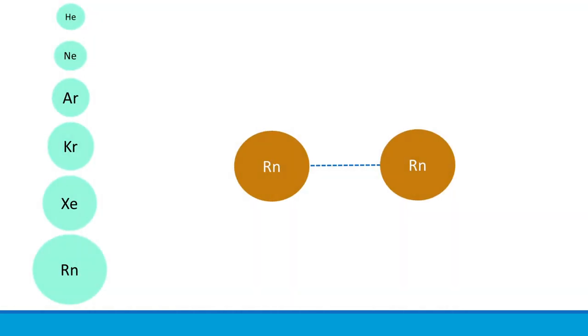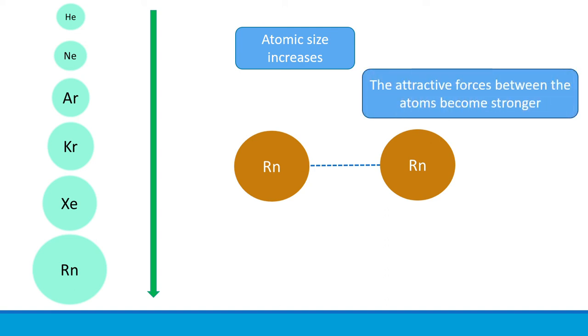Well, first of all, as we move down the group, the atomic size of the element increases. As such, attractive forces between atoms become stronger. These forces are also known as Van der Waals forces. As their forces become stronger, more heat energy is required to overcome the forces.